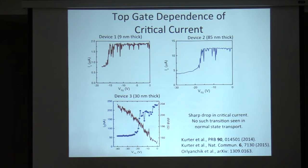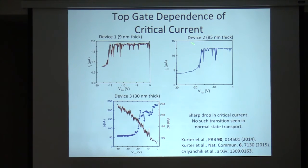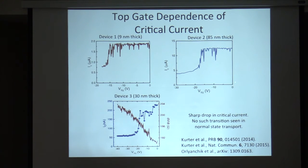Looking at the gate dependence of the critical current, we see a couple of unusual things. For most of the gate range, we see essentially a flat critical current with some fluctuations due to premature switching to the finite voltage state. Then at some critical top gate bias, the critical current drops dramatically and then evolves very slowly. This critical top gate bias occurs more or less at the same value independent of the thickness of the device. The normal state resistance is typically either unchanged or smoothly varies. This suggests that even though the normal state transport is dominated by bulk carriers, the supercurrent seems to be very strongly coupled to the top gate and could be some sort of surface effect.